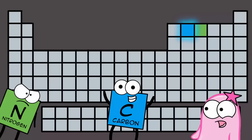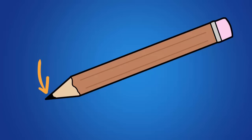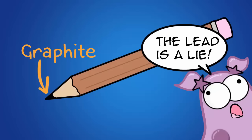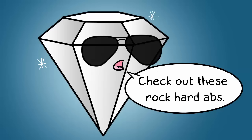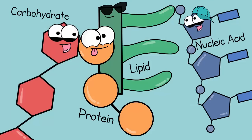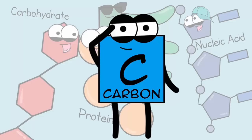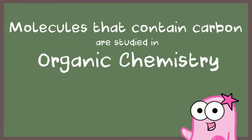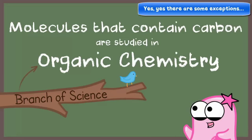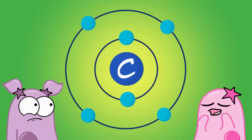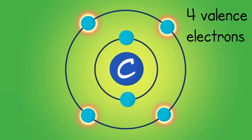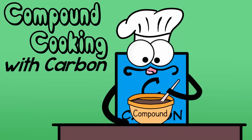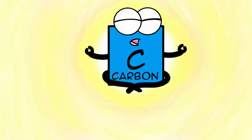But why the love for carbon? Well, we really love how versatile it is. In one form, it could make up your pencil lead, which really isn't lead at all — it's graphite, a form of carbon. In another form, carbon can make up one of the hardest substances: diamond. The big four biomolecules — carbohydrates, lipids, proteins, and nucleic acids — they all have carbon. Molecules that contain carbon are known as organic molecules, and organic chemistry is a branch of science that studies the interactions of molecules that contain carbon. Carbon has four valence electrons and the ability to form tons of compounds, making it a building element in life.